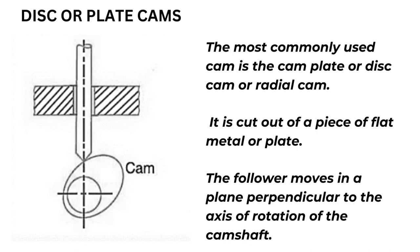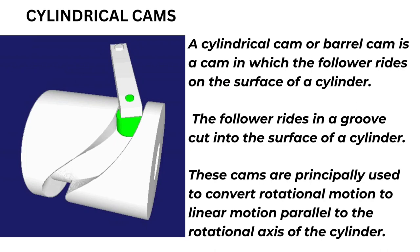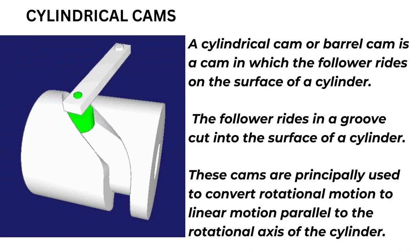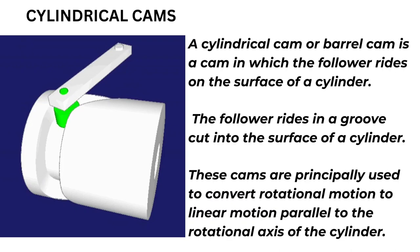Cylindrical cams: a cylindrical cam or barrel cam is a cam in which the follower rides on the surface of a cylinder. The follower rides in a groove cut into the surface of a cylinder. These cams are principally used to convert rotational motion to linear motion parallel to the rotational axis of the cylinder.